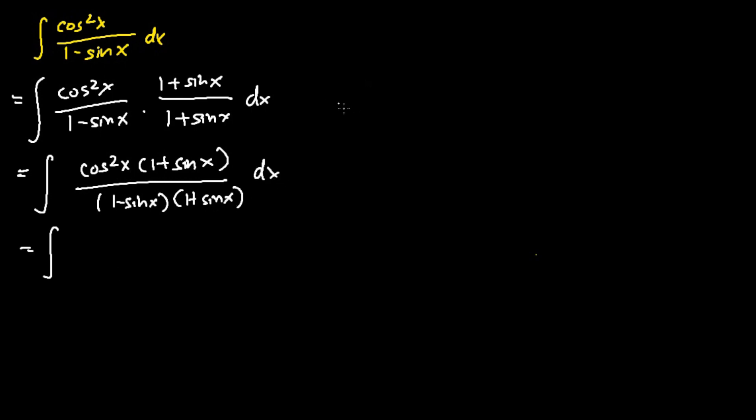After which, the next step we're going to do is apply the algebraic rule that a minus b times a plus b equals a squared minus b squared. In this particular case, a equals 1 and b equals sine x.